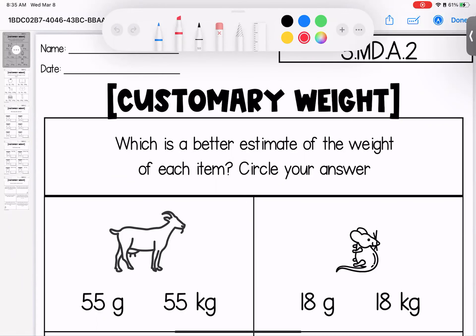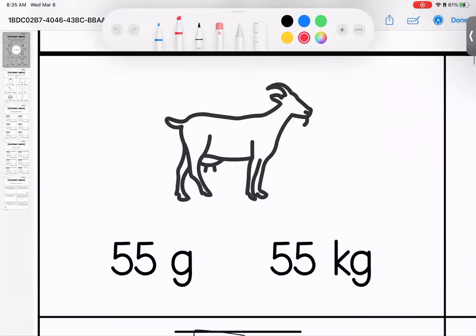Hey, kiddos. Welcome to this week's homework, where we are looking at customary weight. Just as a reminder, before we dive into these questions, that in class we were using two examples. An example of a gram would be a paperclip, and an example of a kilogram would be a pineapple. So when we are trying to decide which would be the better weight, think of it as paperclips or pineapples. Does it make the most sense that our goat would be 55 paperclips or 55 pineapples in weight?